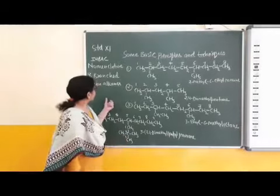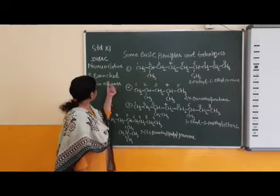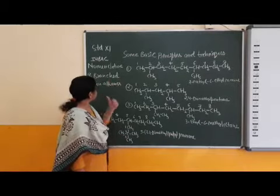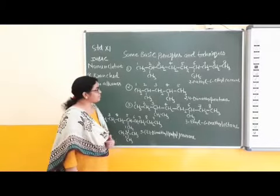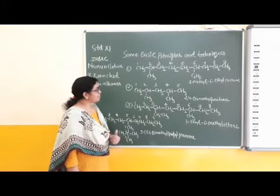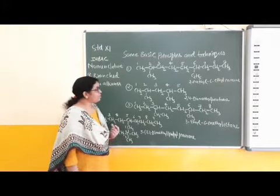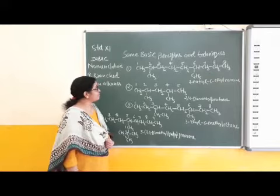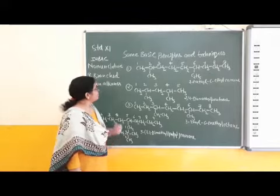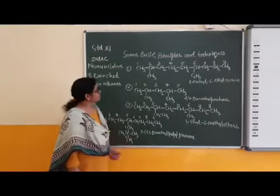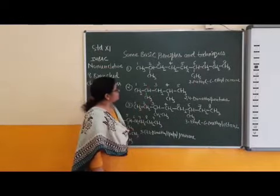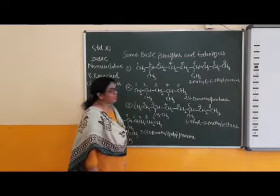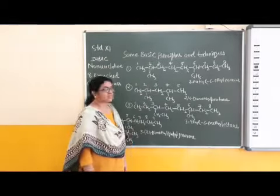But in this case, when branches are present, what rules apply? How many rules are given? First example: if different alkyl groups are present.